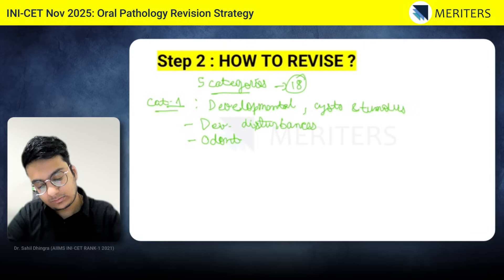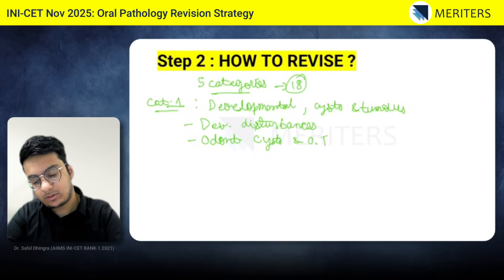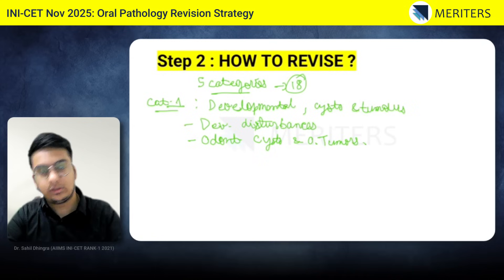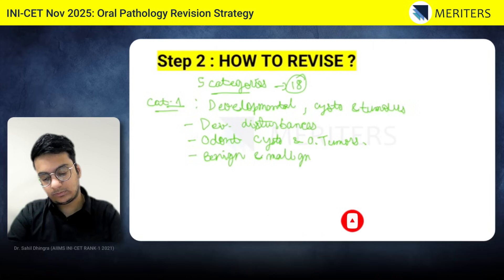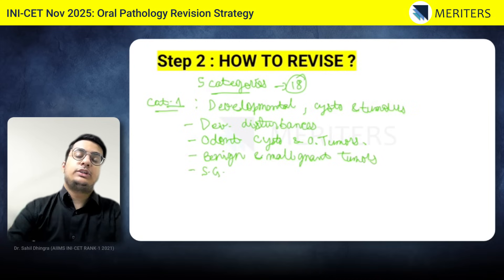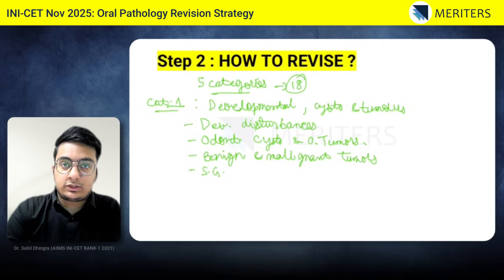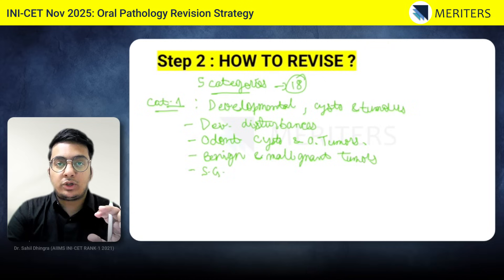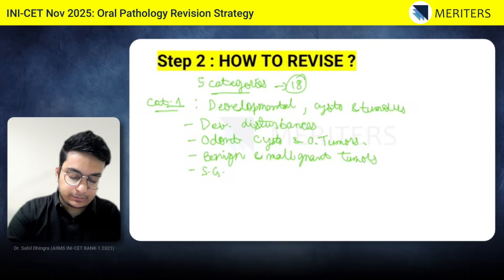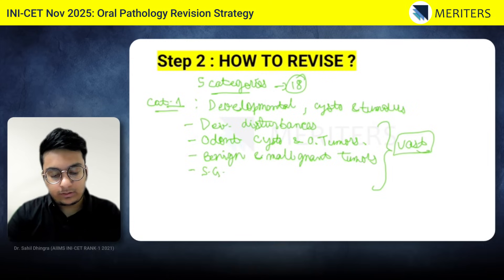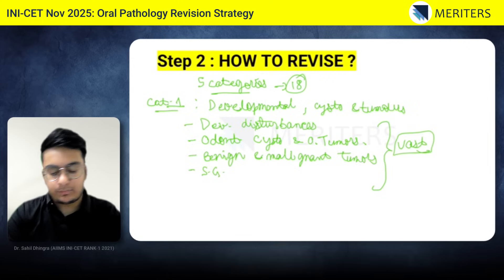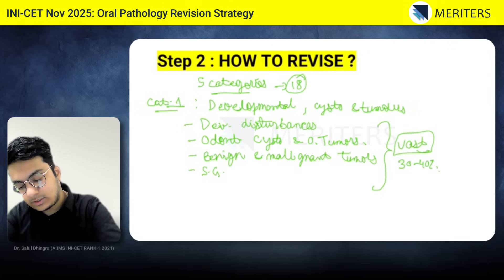Category one includes your odontogenic cysts, odontogenic tumours, benign and malignant tumours of the oral cavity, and salivary gland disorders — four chapters in total. These are the most bulky initial chapters, and they cover mostly 30 to 40 percent of your syllabus. The chapters on developmental disturbances and benign and malignant tumours are especially vast, making this the most extensive portion of your oral pathology syllabus.